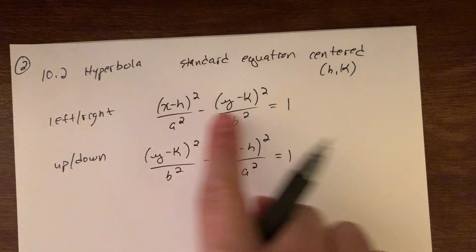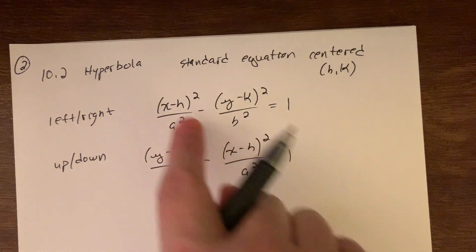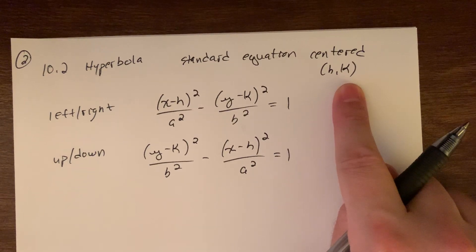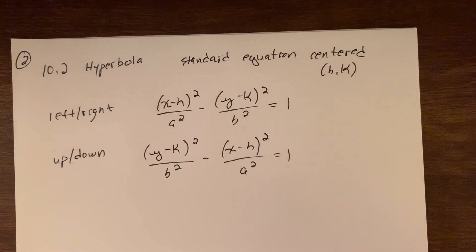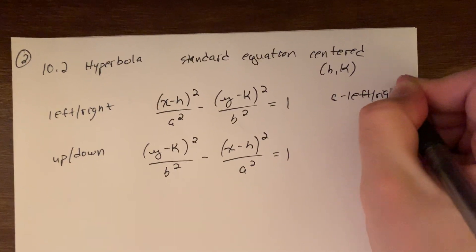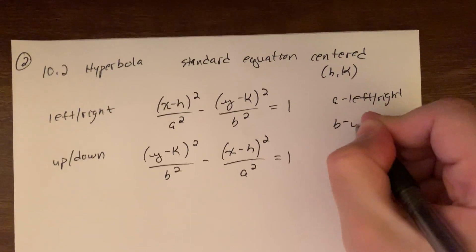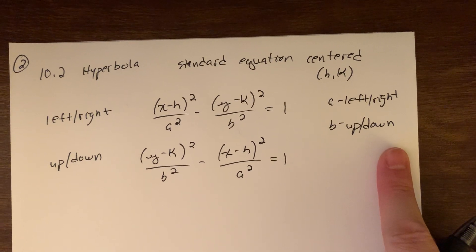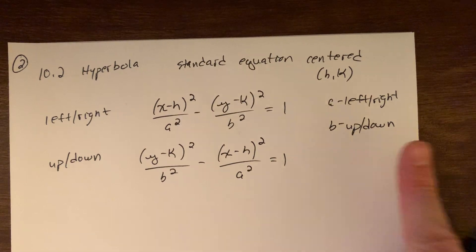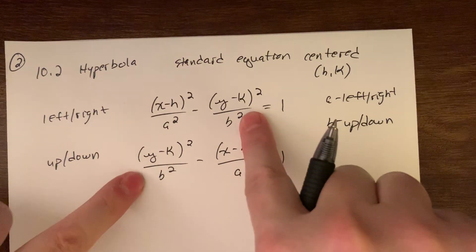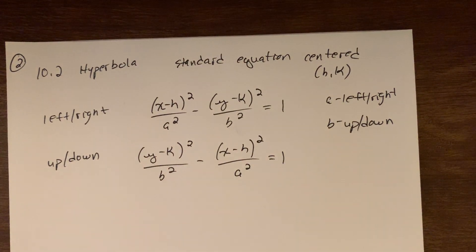h will always connect to the x and k will always connect to the y to give my x-y pair for my center. A and B still have that sense of distance — a connects to the left-right distance and b connects to the up-down. This is again where the book has that same little issue where they always use a in one way; I always like to use a to connect to x and b to connect to y.